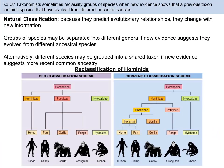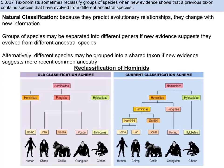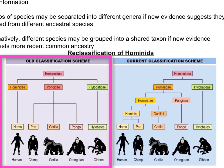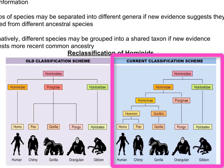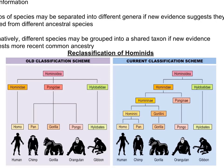Taxonomy and yoga have at least one thing in common — they are flexible. It's important to change when the facts present themselves. Groups of species may be separated into different genera if new evidence suggests they evolved from different ancestral species. Alternatively, different species may be grouped into a shared taxon if new evidence suggests more recent common ancestry. For example, in the old classification system the Hominidae family contained just one genus, Homo. But after new evidence was discovered, scientists reclassified the family and shifted many other primates into the same family — except the gibbons.